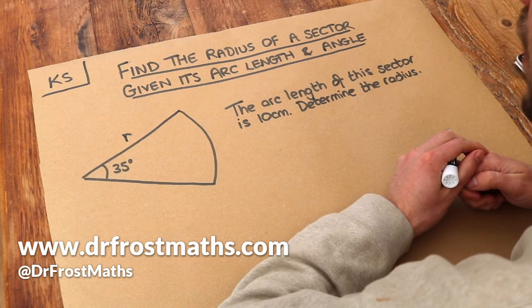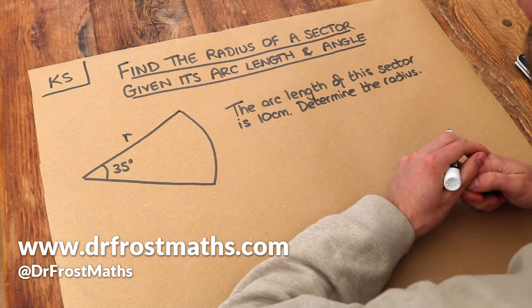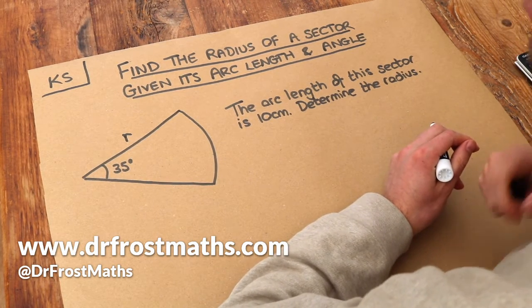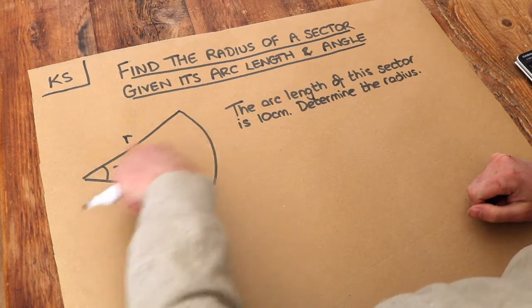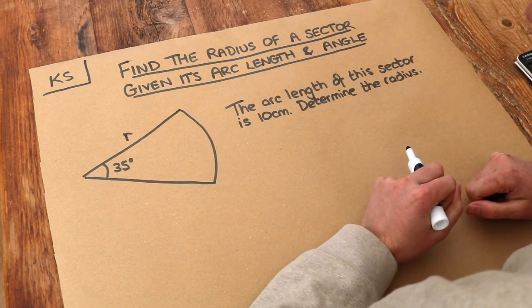Hello and welcome to this Dr. Ross Maths key skill video on finding the radius of a sector given its arc length and angle. Remember, a sector just means a slice of a circle - you can think of it as a pizza slice.